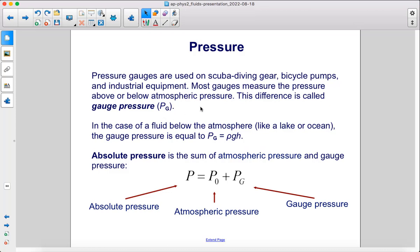In the case of a fluid below the atmosphere, like a lake, ocean, or pool, the gauge pressure is equal to rho GH. Absolute pressure is the sum of the atmospheric pressure and gauge pressure. So here we have P-naught, which is the atmospheric pressure. P sub G is the gauge pressure, and if you add those together, that is the absolute pressure.